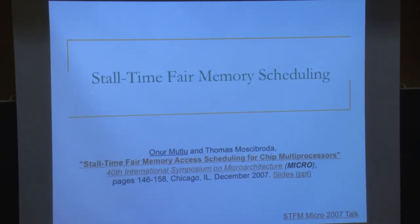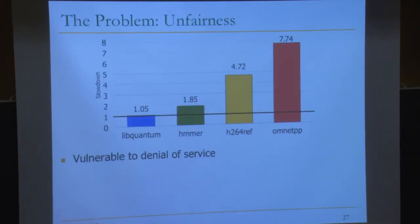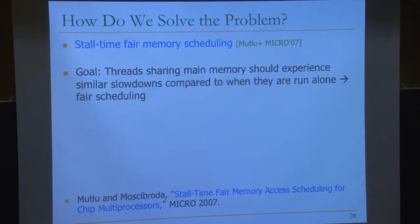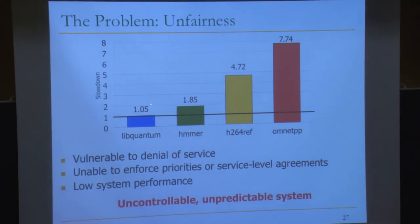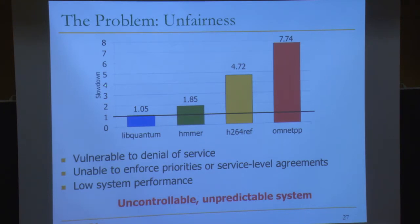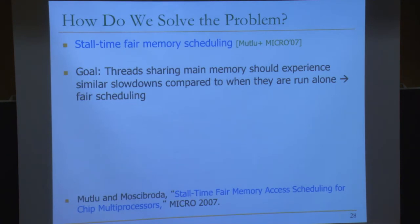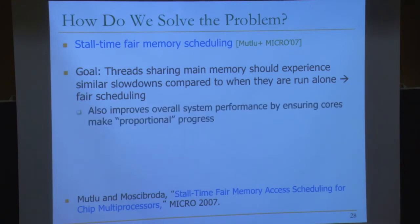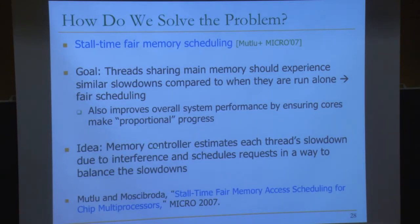When we first started looking at this problem, we did the obvious thing. Our goal was to design a perfectly fair system. Our definition was to balance the slowdown of threads interfering with each other — instead of widely varying slowdowns, have a memory scheduler that balances all slowdowns. That's the idea of stall time fair memory scheduling. Threads sharing the memory system should experience similar slowdowns relative to when run alone, which also improves overall system performance and enables more proportional progress of different cores.